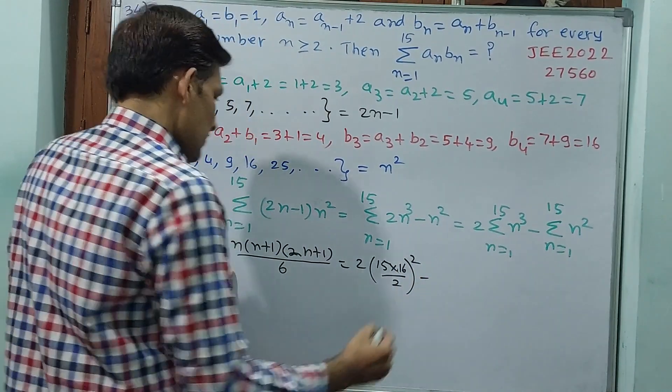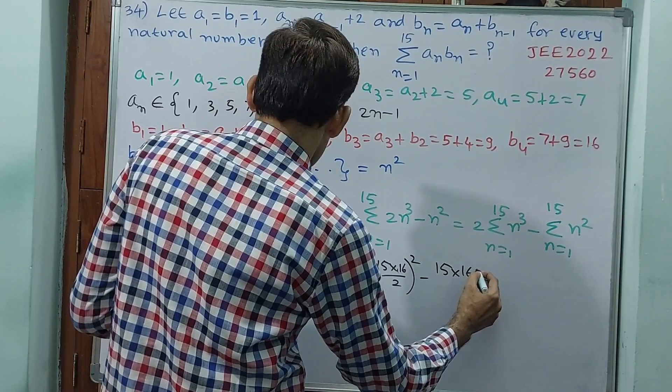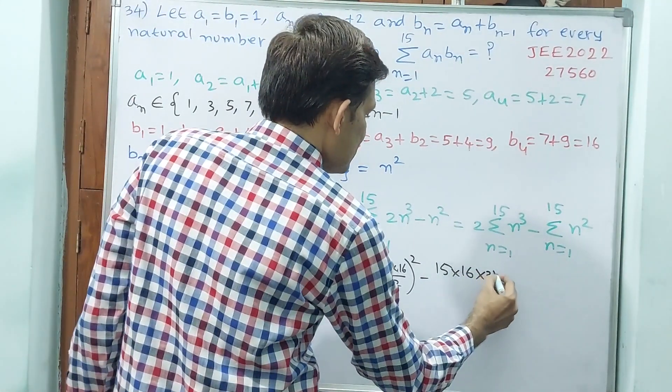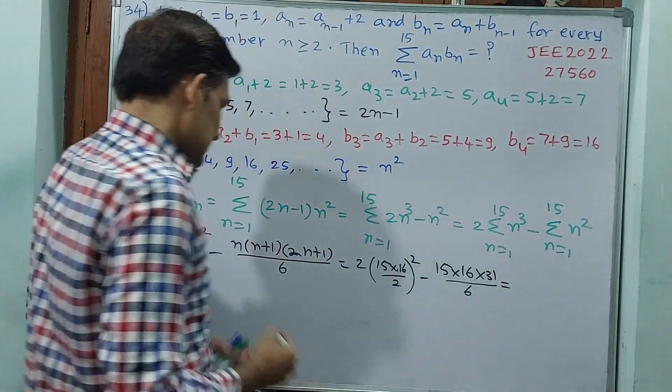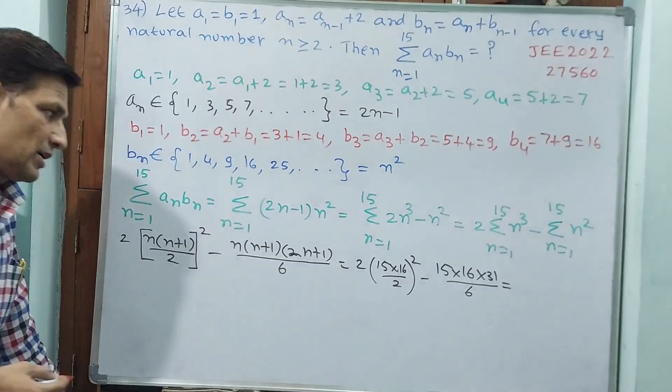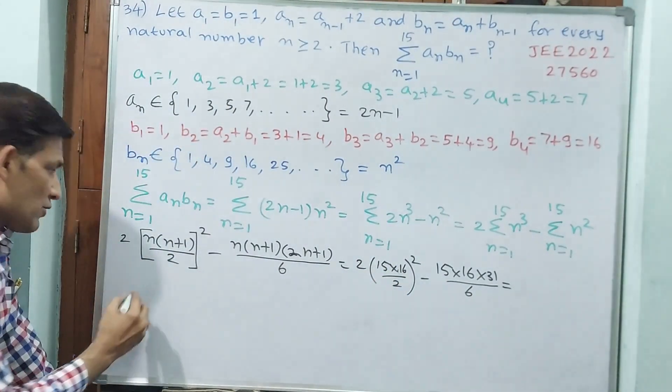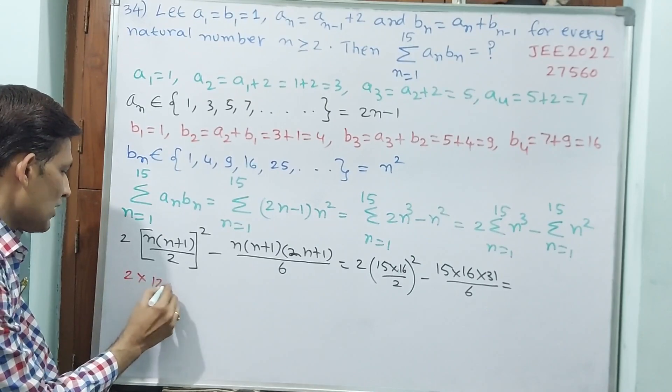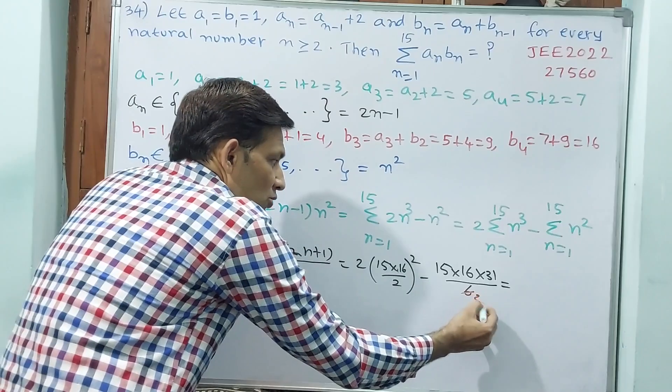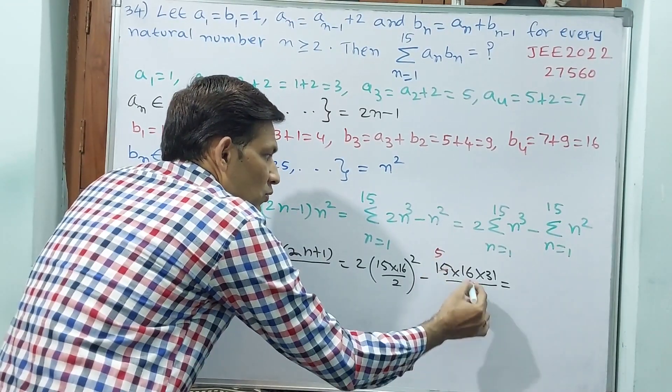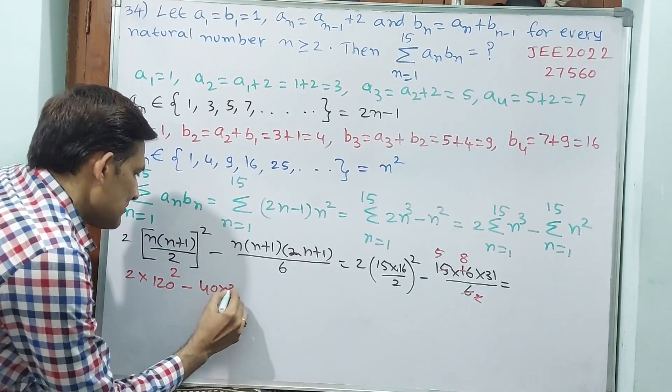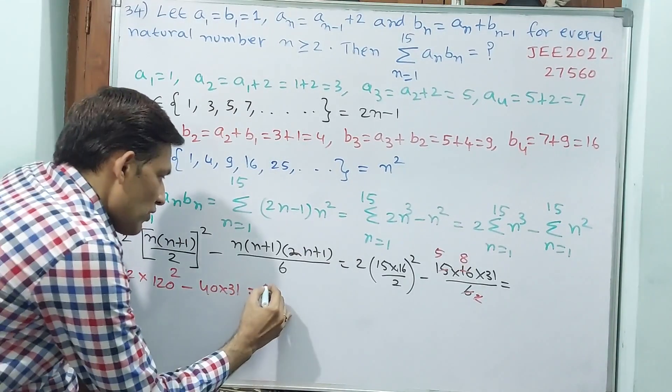That is equal to 2 into, see, 15 into 16 by 2 whole square, minus 15 into 16 into 2 into 15 plus 1, 31 by 6. That is equal to, see, 2, 15, 8 are 120, 120 square. 2 into 120 square.